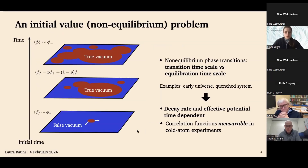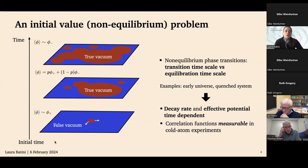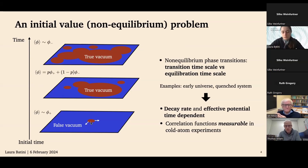We want to rephrase the problem as an initial value problem in time, specifying initial conditions and tracking the evolution of the field expectation value — the one-point function — and higher-order correlation functions. In a single experimental run, the field decays through the nucleation of bubbles of true vacuum, which then expand, collide, and merge. The expectation value, which is also a volume average, evolves from the false vacuum state, passes through a mixture of the two phases, and finally reaches the true vacuum at the completion of the phase transition.